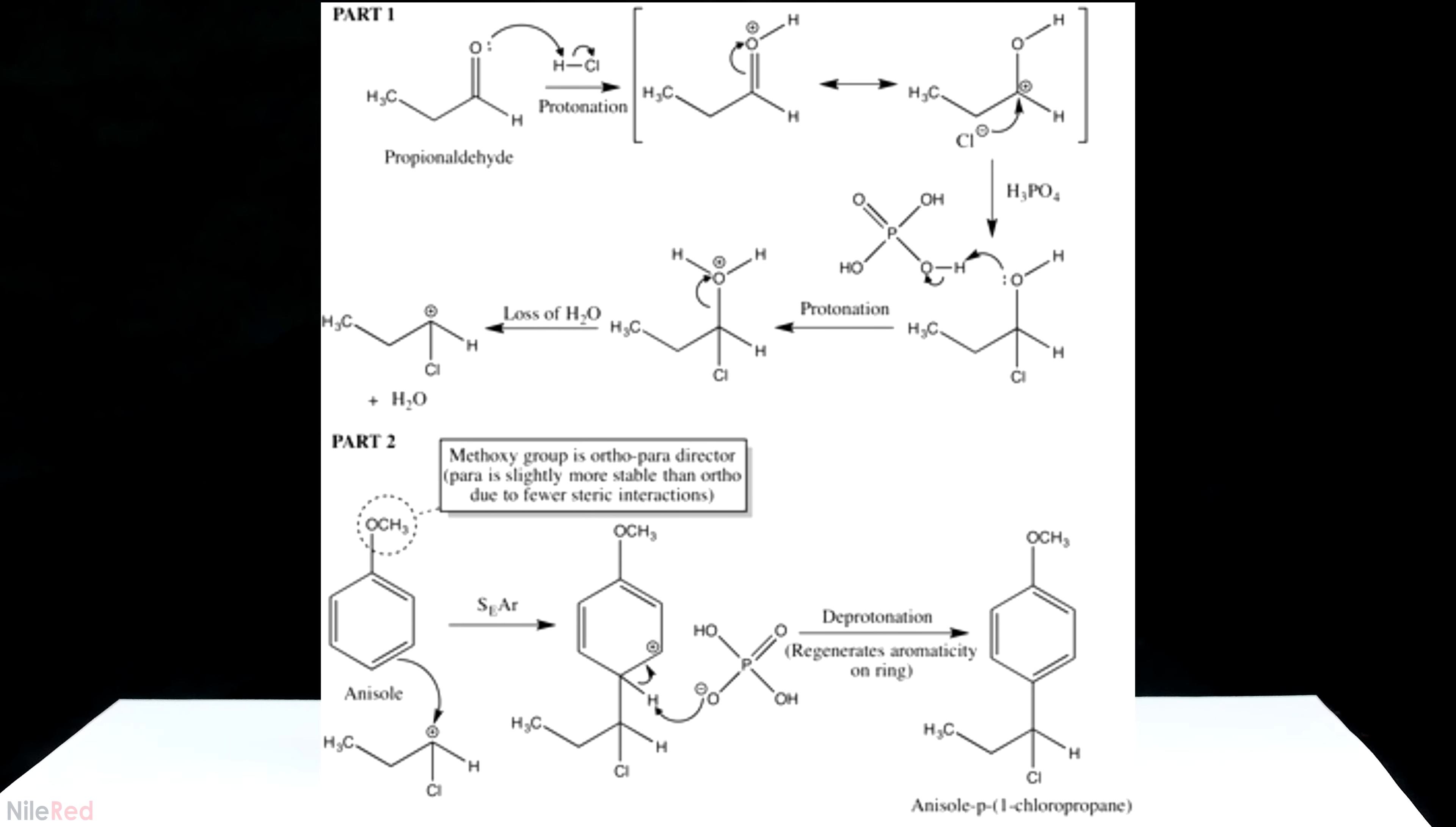The carbocation is a relatively good electrophile, and the activated anisole ring can attack it. The attack by the anisole ring is activated by the methoxy group which donates its electrons, but I think he forgot to show it here. After the electrophilic aromatic substitution, the extra hydrogen is picked up and the aromaticity is regenerated.